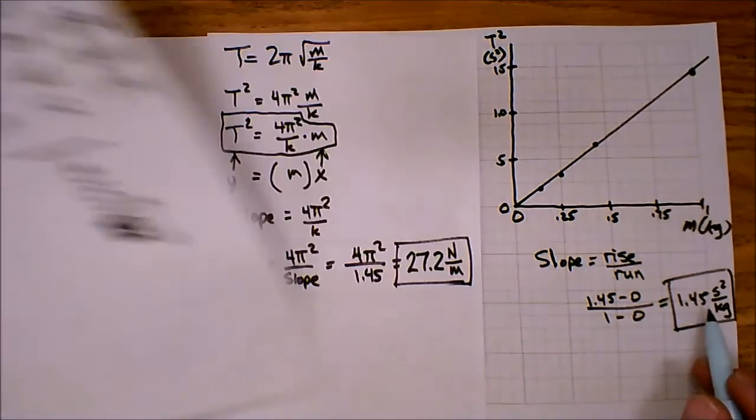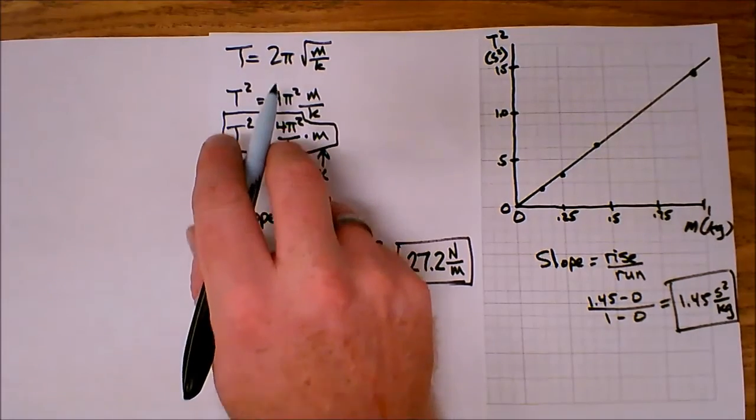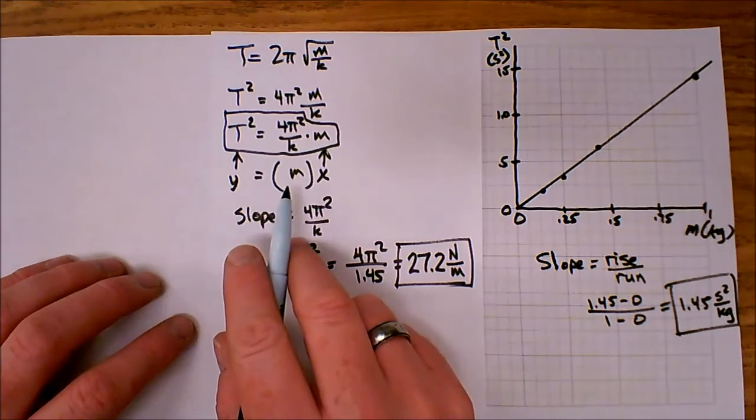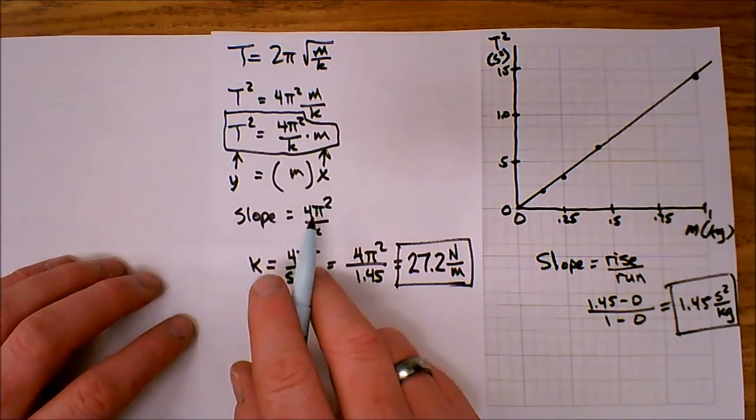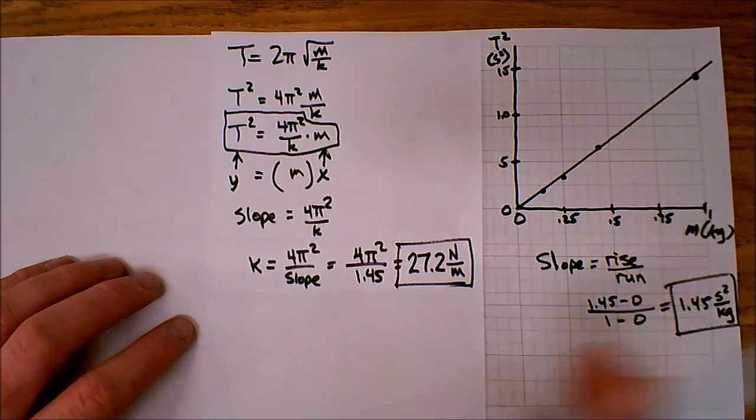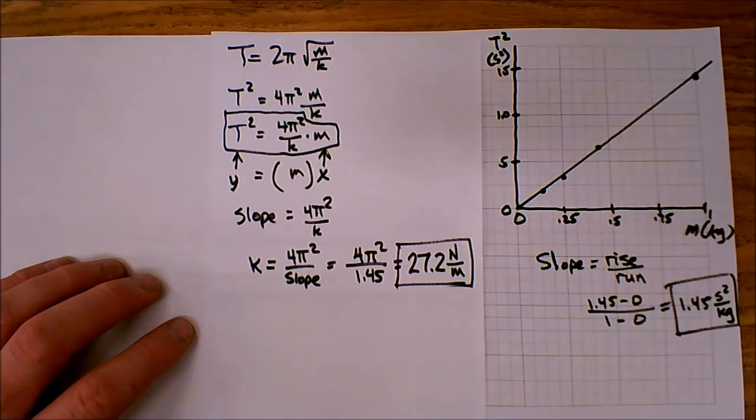Found the slope, and then I was able to rearrange the equation in such a way that I can see, in this format, that the slope was equal to 4π squared over k. I simply then solved it for k, plugged in my slope value, and I've got my answer. Thank you.